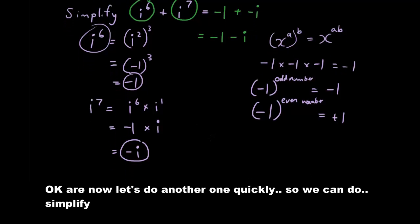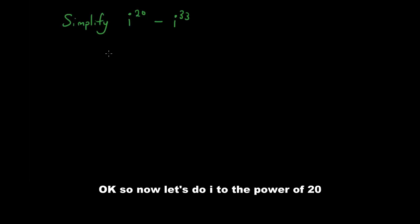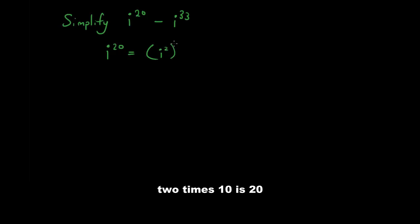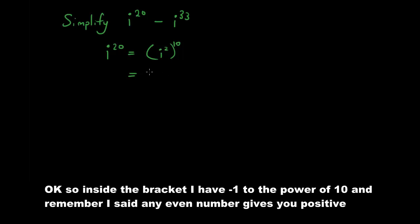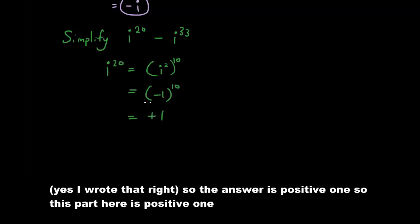Now let's do another one quickly. Simplify i to the power of 20 minus i to the power of 33 — just something a bit more challenging. So let's do i to the power of 20 first. i to the power of 20 equals i squared to the power of 10, since 2 times 10 is 20. Inside the bracket we have negative 1 to the power of 10. Since 10 is an even number, negative 1 to an even power is positive 1. So i to the power of 20 equals positive 1.